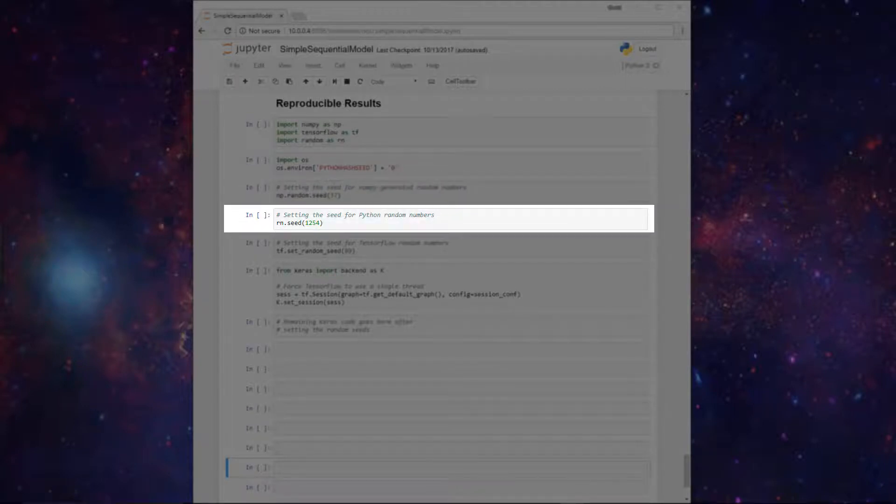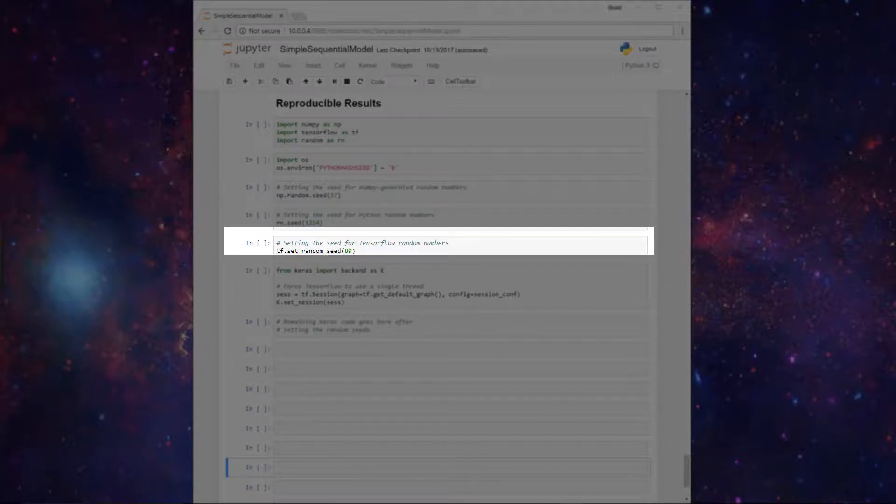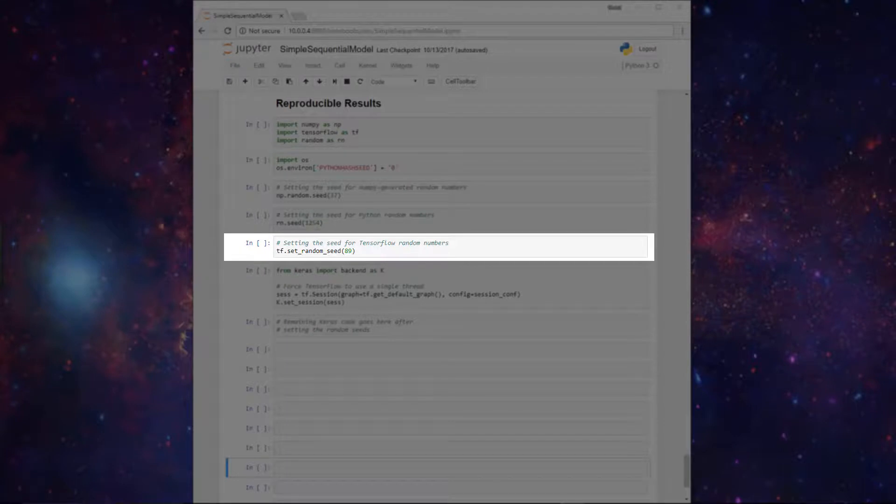So then we specify the random seed for Python as shown here, and that's by using the random library. And finally we do the same thing for TensorFlow by calling the set random seed function.